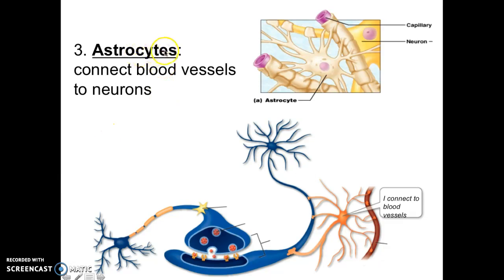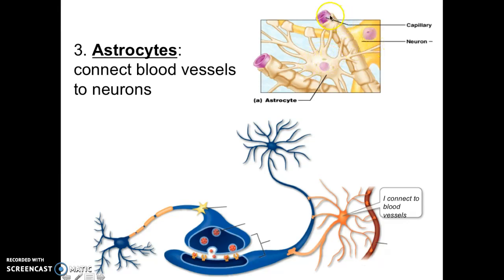The next one is called the astrocytes. Your astrocytes will be connected to your blood vessels and basically connect your blood vessels to the neuron. They make sure that your neuron is getting the oxygenated blood it needs and taking away the deoxygenated blood. Cells thrive on oxygen — without it, they cannot work. You want your neurons to work, otherwise you won't have any brain activity. So astrocytes are connected to the blood vessels — find your capillary, artery, or vein, and you'll see it.